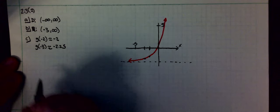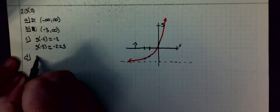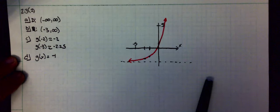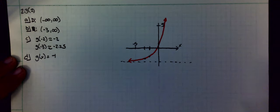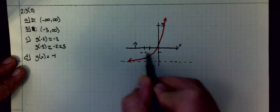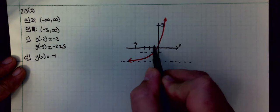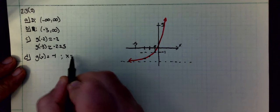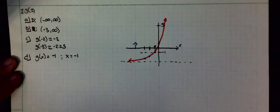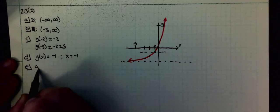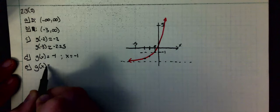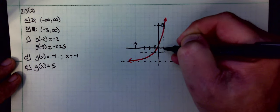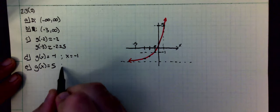Next thing we want to do, part D: they want to know when g of x is equal to negative 1. So they want to know when is the y value negative 1, and that y value, the x value for that y value of negative 1 is at approximately negative 2.5. Part E: we want to know when is the y value equal to 5. y value is equal to 5, and x is approximately positive 1.